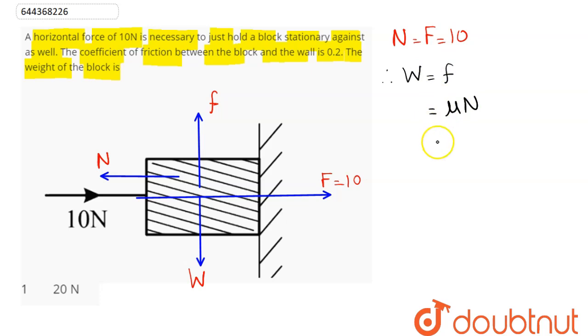Now we can say here mu coefficient of friction is given as 0.2, normal reaction we have calculated as 10. Hence we can say weight comes out to be 2 newton. Hence the weight of the block is